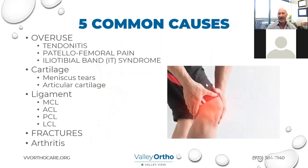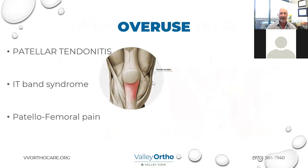Now that we know the anatomy, we're going to talk about five common causes. We're going to talk briefly about overuse injuries, cartilage injuries, meniscal and articular cartilage, ligament injuries, briefly on fractures, and then we're going to spend some time on arthritis because that's a very common topic these days.